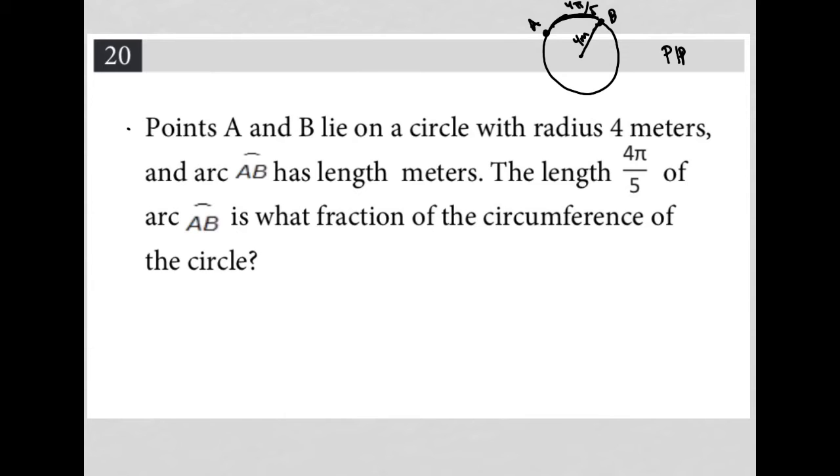Okay, so this is a lot of what I call translation. These words all have a meaning. The length 4π over 5, of arc AB - so 4π over 5 goes with this arc AB.